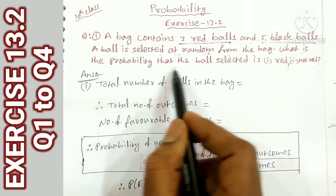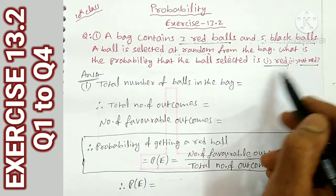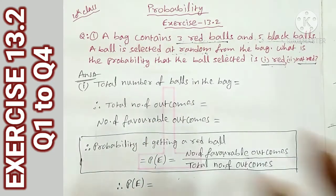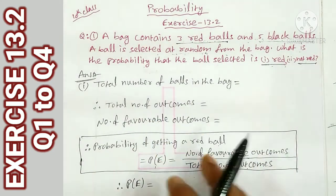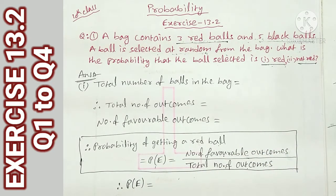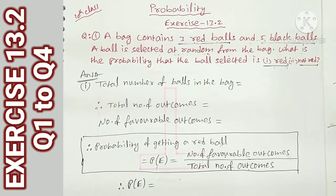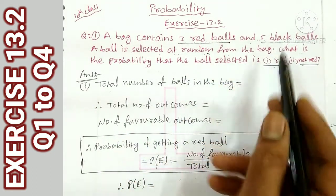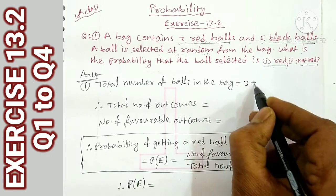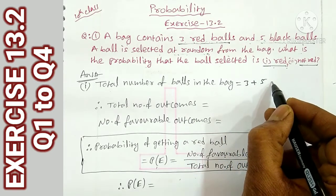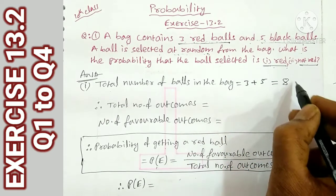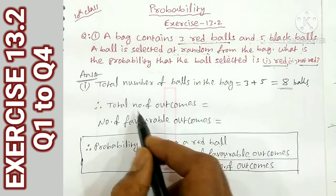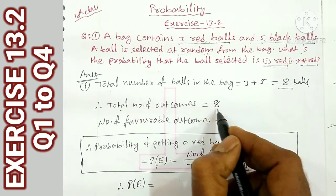From the bag, what is the probability that the ball selected is red, or not red? There are 2 conditions. The total number of outcomes — we pick one ball from the bag — so the total number of outcomes is 8.